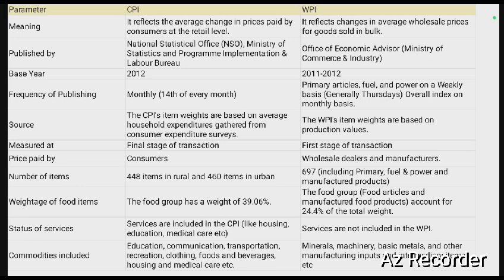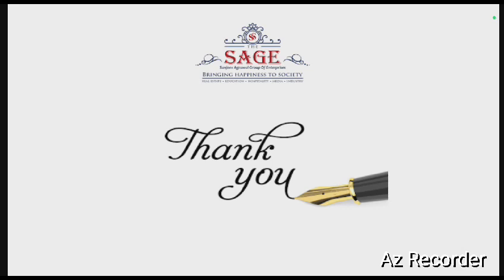In summary, CPI is calculated at the retail level — based on the prices consumers pay at MRP — whereas WPI is calculated at the production and wholesale level, representing prices at which wholesalers sell in bulk to shopkeepers. That covers today's session on CPI, WPI, headline inflation, core inflation, and causes and control of inflation. Thank you very much for listening patiently, and we'll be back with the next video on a new topic.